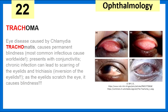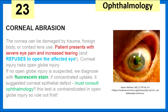Trachoma, caused by Chlamydia trachomatis, is the most common infectious cause of blindness worldwide. The blindness is caused by trichiasis, where there's inversion of the eyelids, causing the eyelids to scratch the eye. Corneal abrasion involves trauma to the cornea — patients present with severe eye pain and refuse to open the affected eye. A complication is open-globe injury, in which fluorescent stain is contraindicated — but fluorescent stain is what we need to diagnose corneal abrasion.